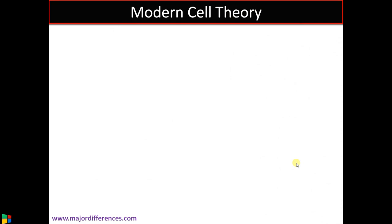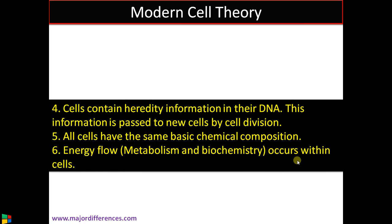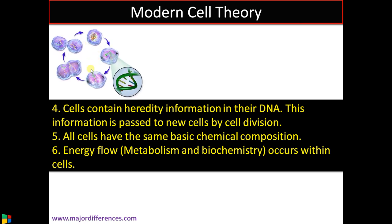Now moving into modern cell theory. Modern cell theory is simply an expansion that has taken into consideration the knowledge of molecular biology, biochemistry, genetics, etc. Now we know that the cell contains hereditary information in the form of DNA located in the nucleus, and this information is passed to new cells by cell division. So DNA is transferred from one cell to another during cell division.